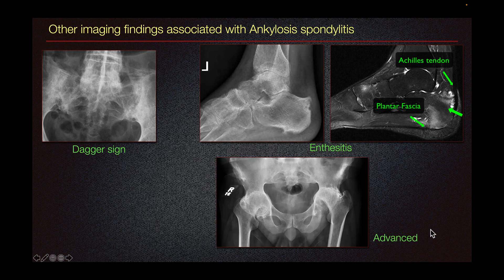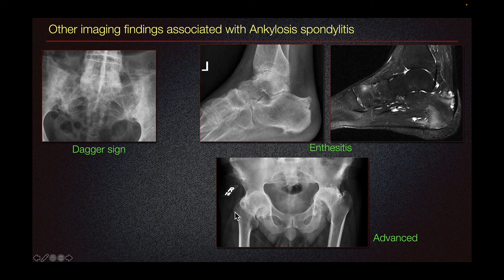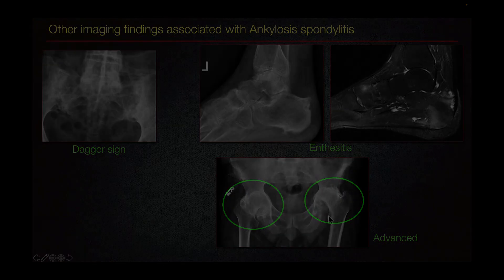In advanced cases of ankylosing spondylitis, the peripheral joints are also affected, including the hips, where we can see complete loss of joint space bilaterally, left greater than right.